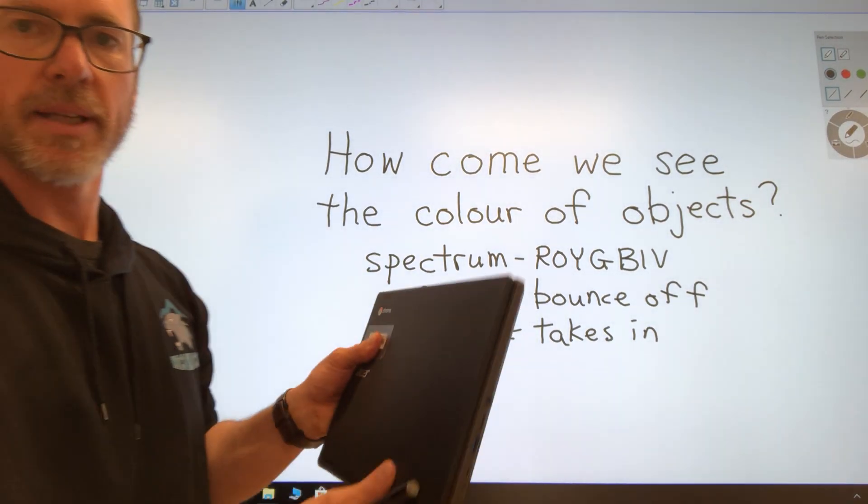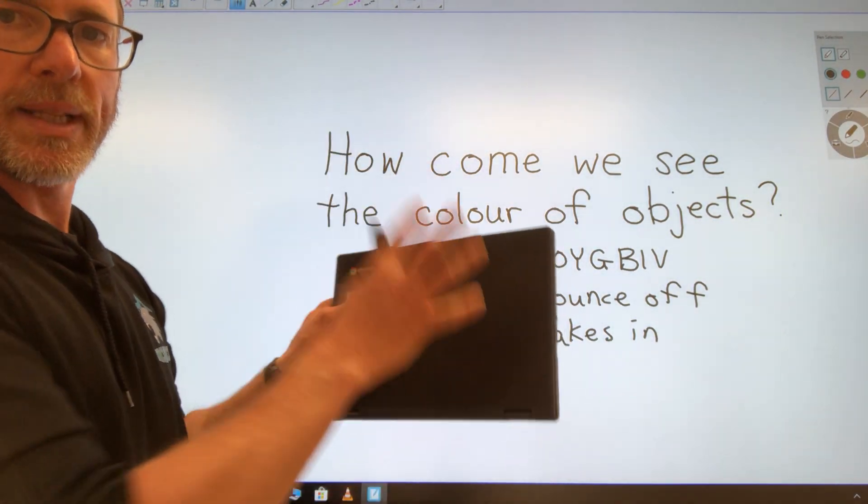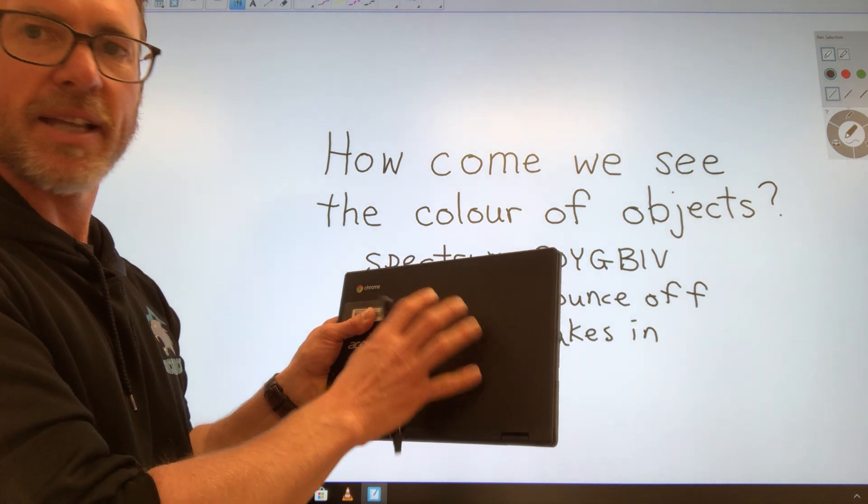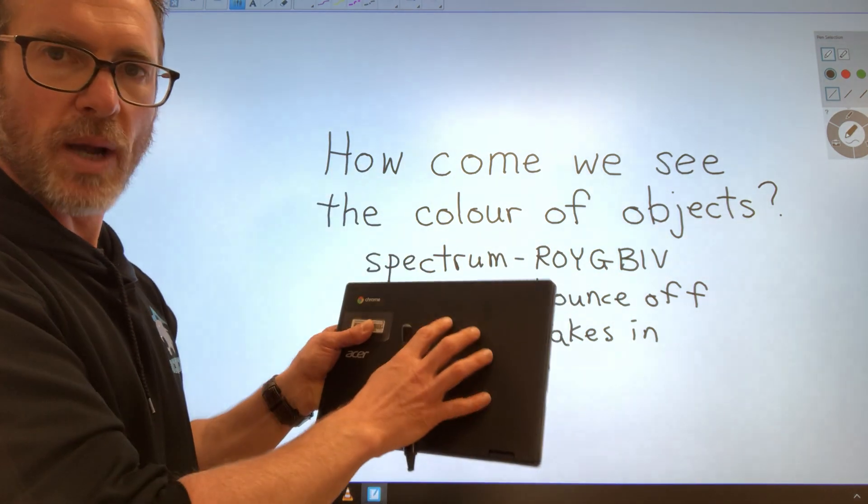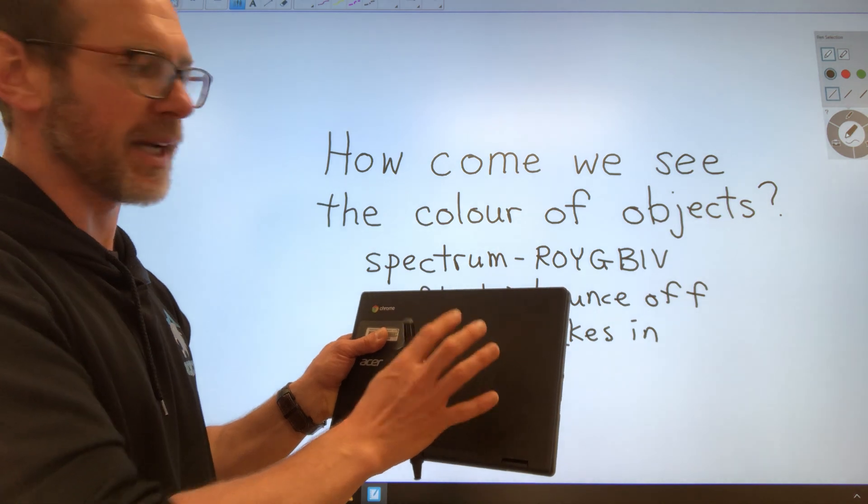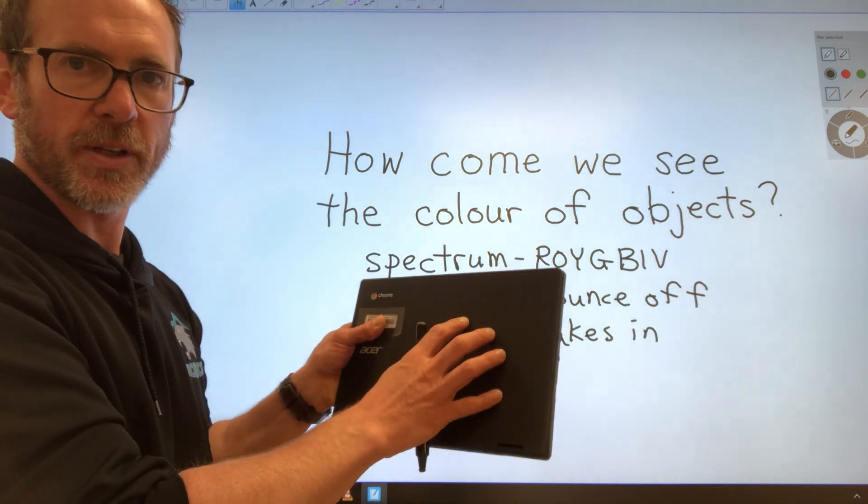Our computer is a little different. White light is hitting it and it's not reflecting any colors. So that's why we see it as being black, because it absorbs all the different colors of light.